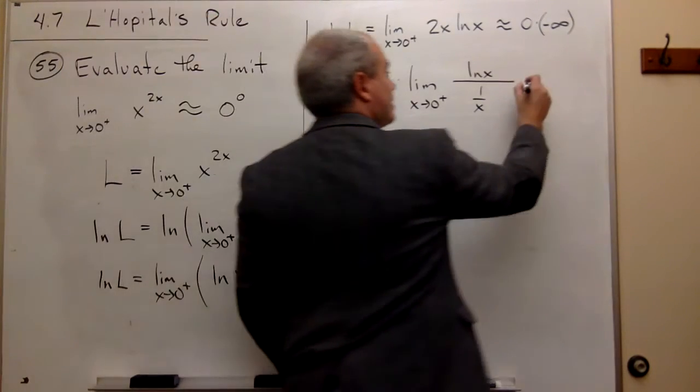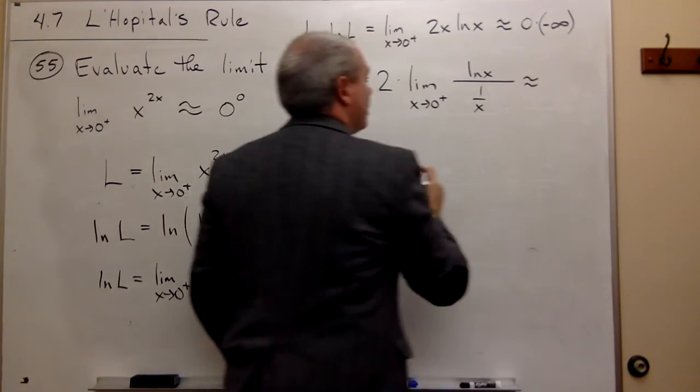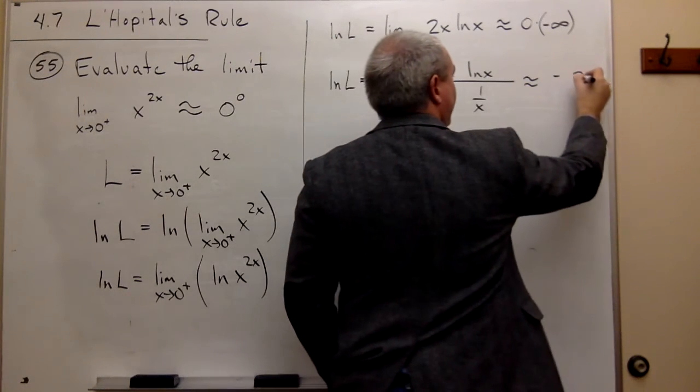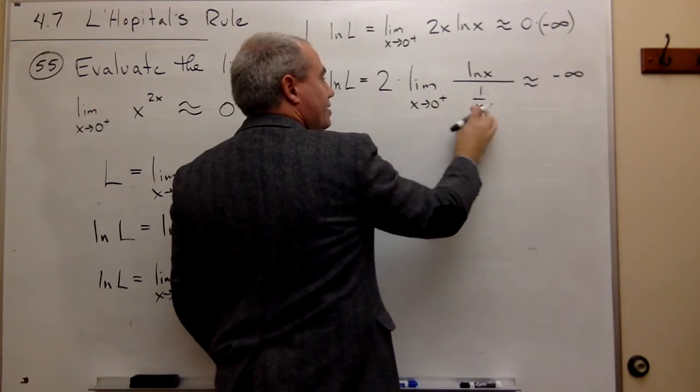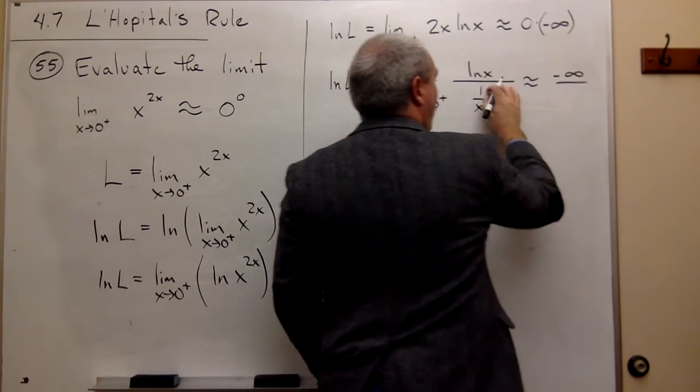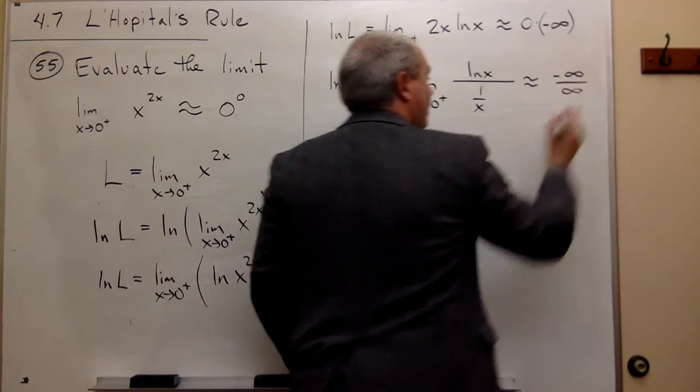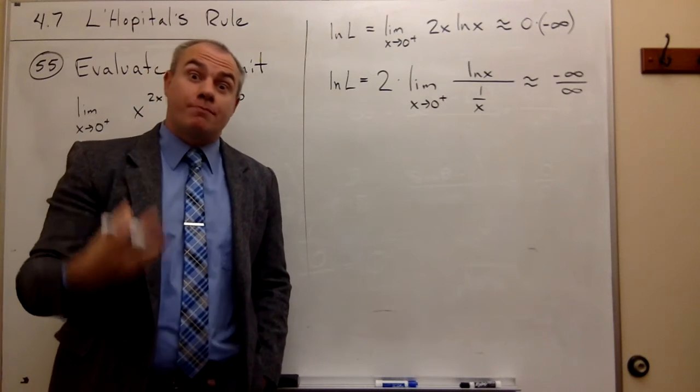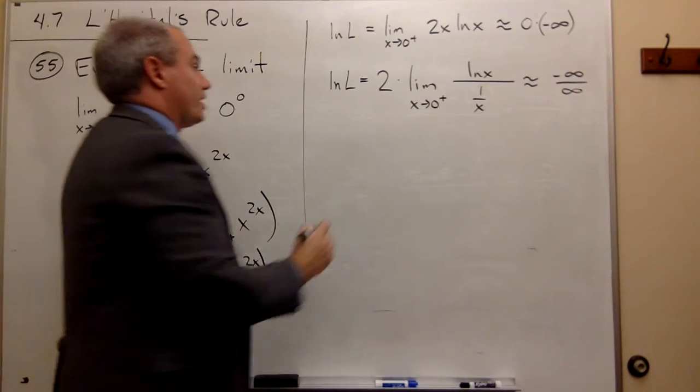But the nice thing is that now what is my form? If I plug in 0 to ln of x, I get minus infinity. And if I plug in 0 down here, I get 1 over 0, which is like infinity. So I get an infinity over infinity form, which is perfect for L'Hôpital's rule. So let's go ahead and use it.